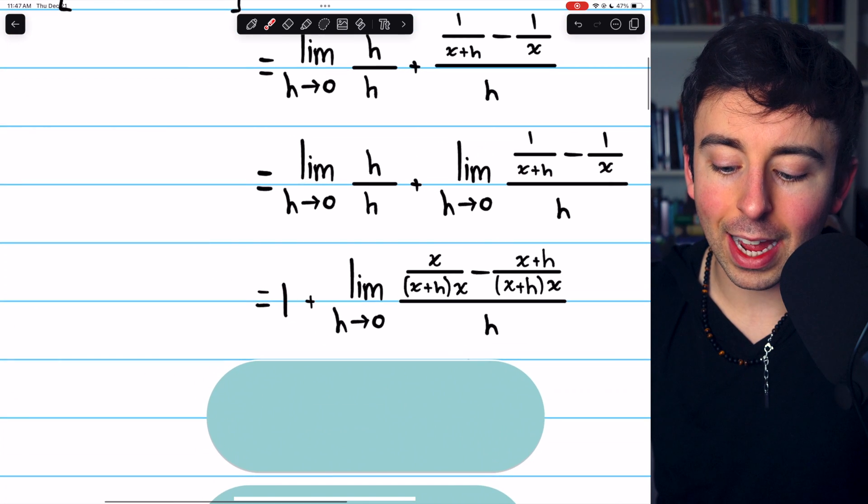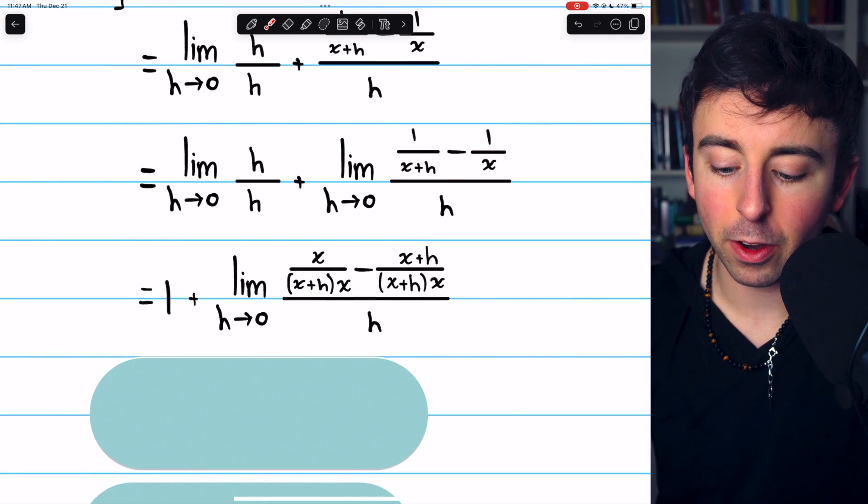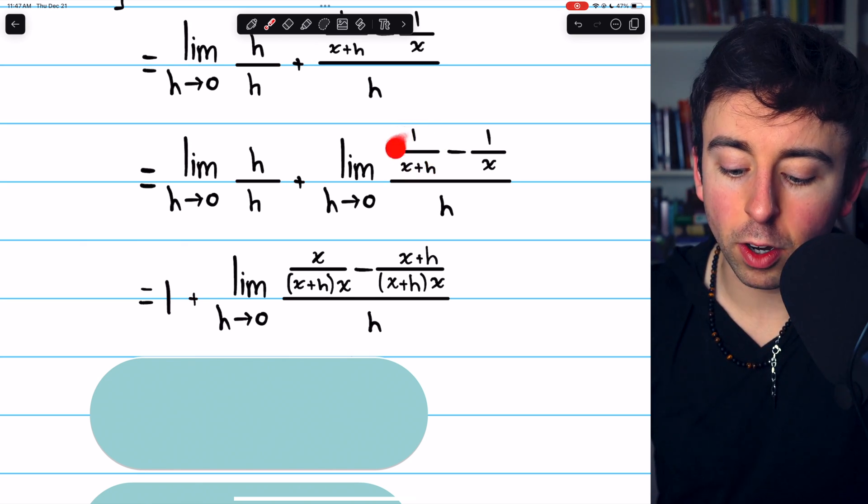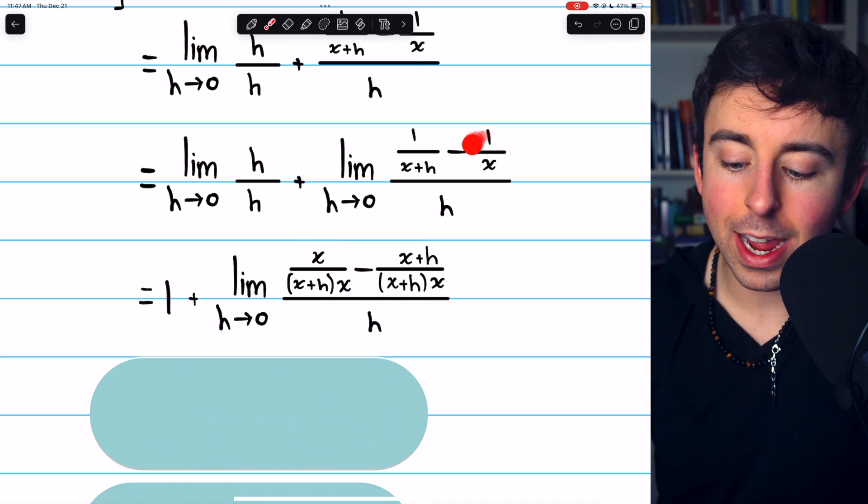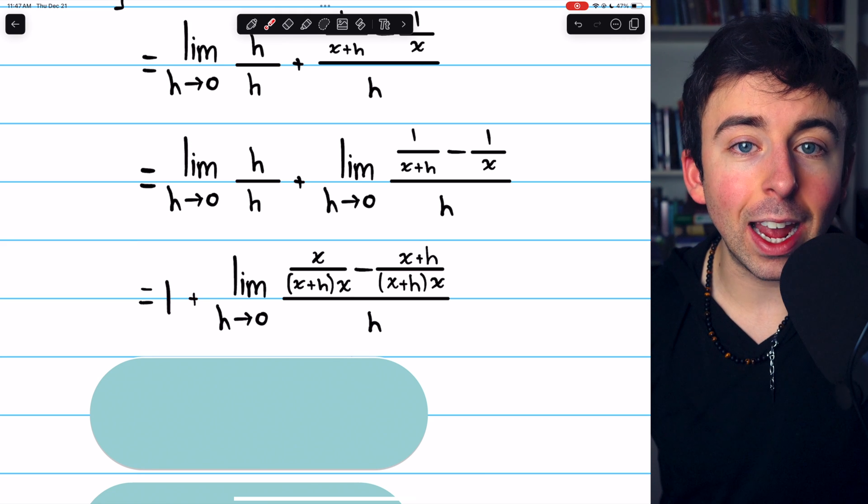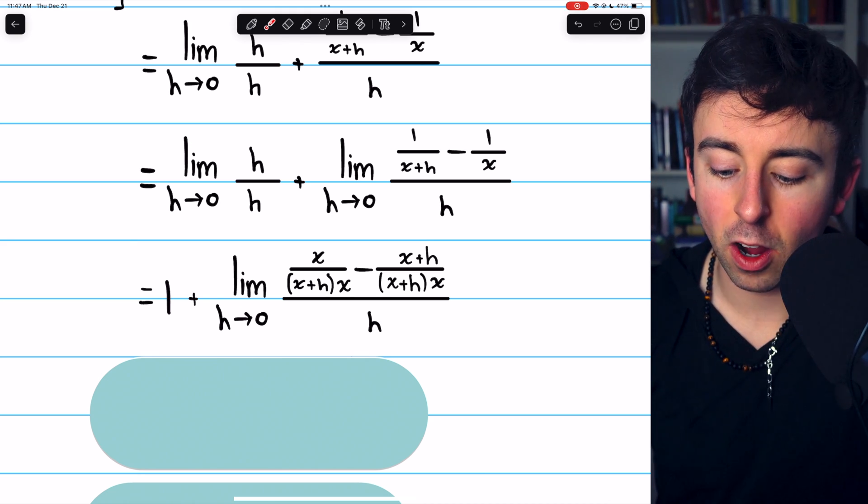On the right side, we're going to have to get common denominators so that we can combine the fractions in the numerator. To get common denominators, we'll need to multiply this fraction on the left by x over x, and the fraction on the right we multiply by x plus h over x plus h. In each case, we're just multiplying by 1, so we're not changing anything here. We're just getting common denominators.